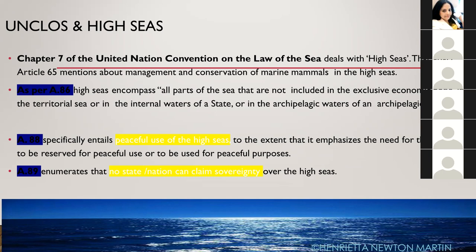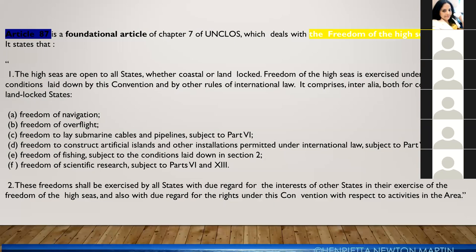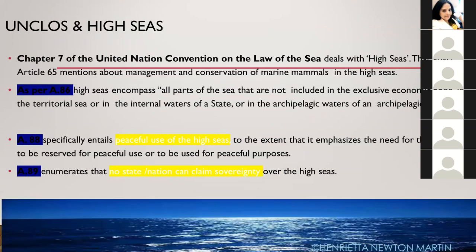Article 88 specifically entails the peaceful use of high seas, emphasizing that the high seas should be reserved for peaceful purposes. Article 89 enumerates that no state or nation can claim sovereignty over the high seas — no country can say the high seas belongs to them. This is a very important article: Article 89 of UNCLOS says no state can claim sovereignty over the high seas because it does not belong to any country.